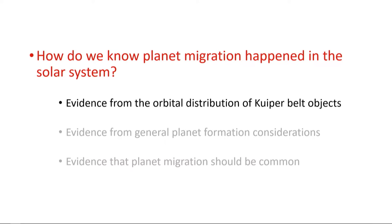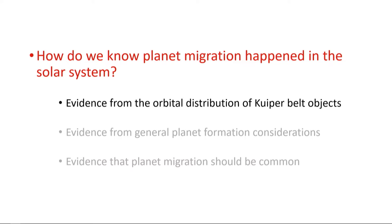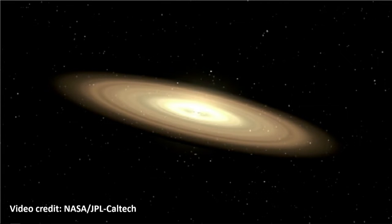The evidence from the distribution of these orbits in the outer solar system: here I'm plotting all of the known or reported Kuiper Belt objects — this population of objects that orbit out past Neptune in our solar system as of last month. This is actually a zoomed-in view; we have some more objects than are shown here. And this provides our best evidence of planet migration in our solar system. But I have to go back a bit to some context to say why these plots mean something in terms of planet migration.